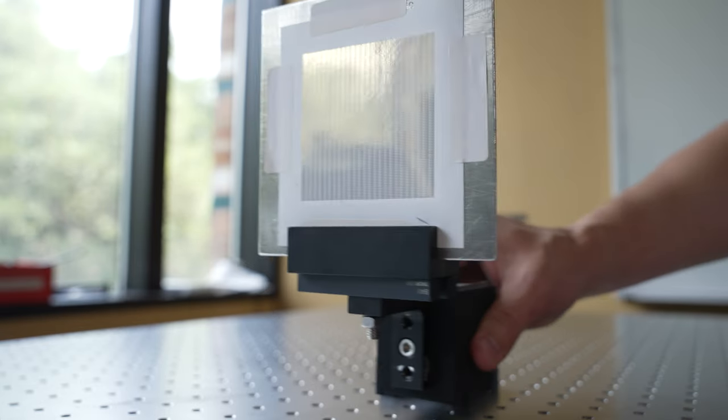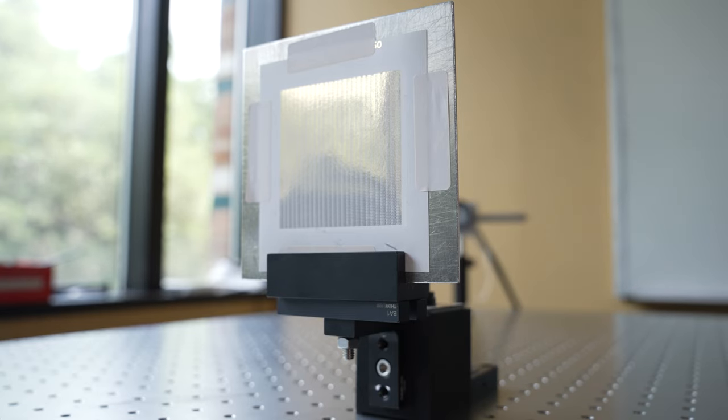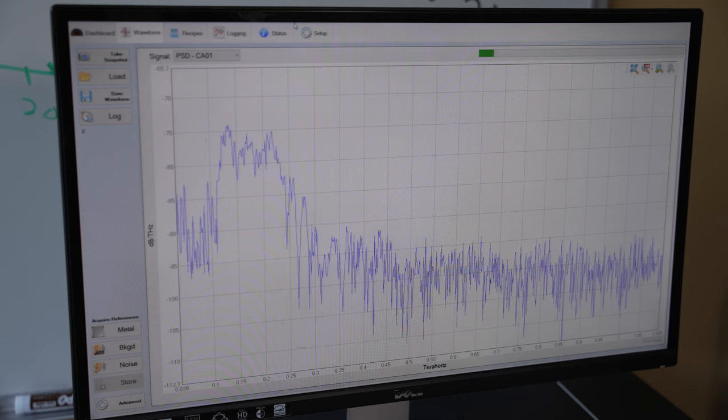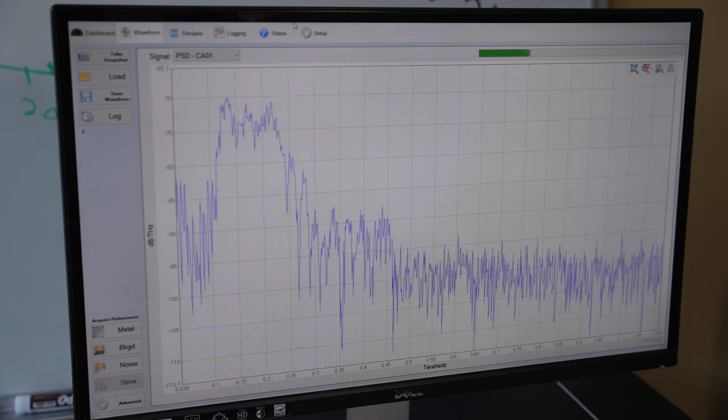However, with the meta-surface in the middle attack, what you can observe is that eavesdropper can intelligently manipulate the impinging wave and diffract a portion of the signal towards herself, thereby successfully eavesdropping on the communication.